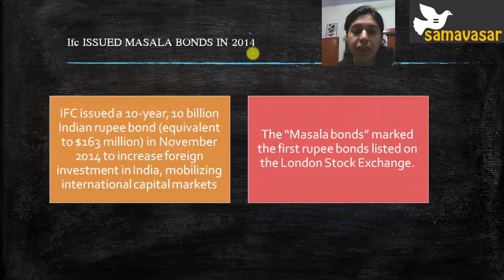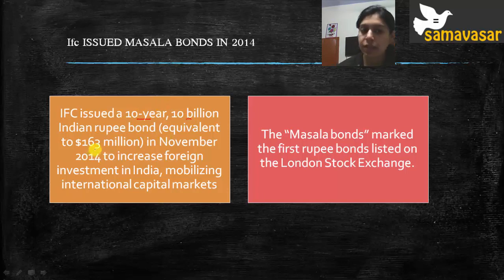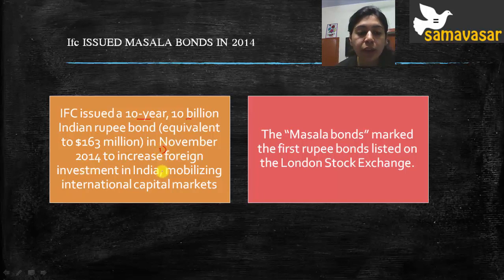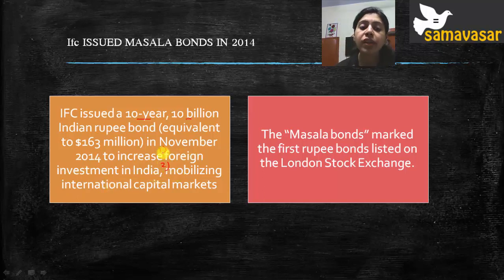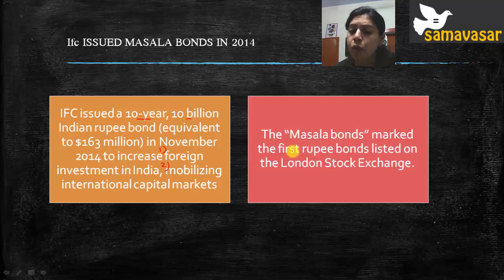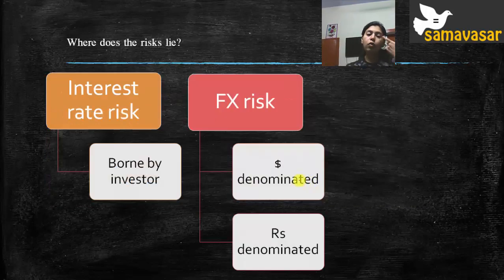IFC issued Masala Bonds for the first time in November 2014 — a 10-year, 10 billion Indian rupee equivalent, that is approximately 163 million dollars. The reasons were: to increase foreign investment in India, since offshore investors effectively loan money to India; and to mobilize international capital markets, as these bonds are launched in international capital markets. Notably, Masala Bonds marked the first rupee bond listed on the London Stock Exchange.